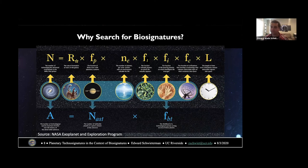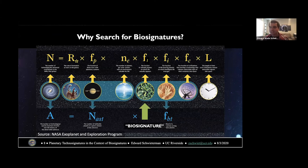Why search for biosignatures? If we're thinking about searching for civilizations, we have the Drake equation. We've made astounding leaps in getting the f_p value — the fraction of stars with planets — from Kepler and ground-based radial velocity surveys. We know planets are very common, nearly one per star. One of the next values to determine is f_l: what fraction of planets actually have a planetary biosphere? This is important for the search for technosignatures, because an advanced civilization probably has to evolve from a simple planetary biosphere to a technosphere.